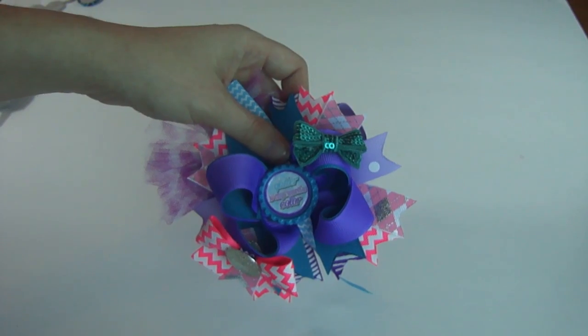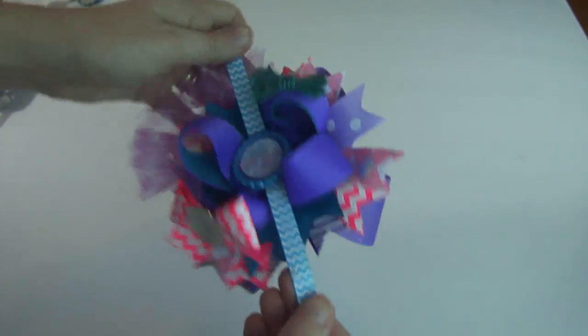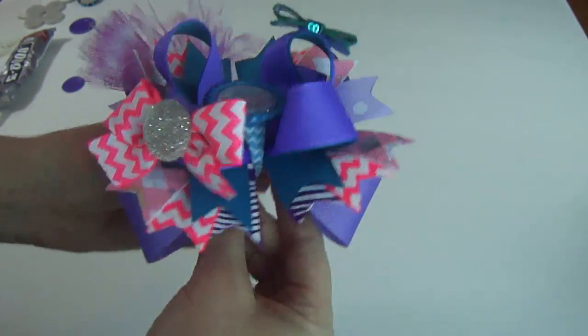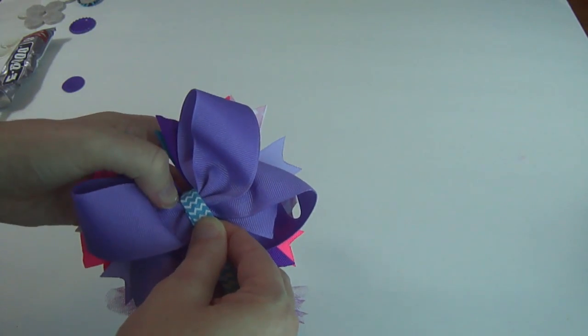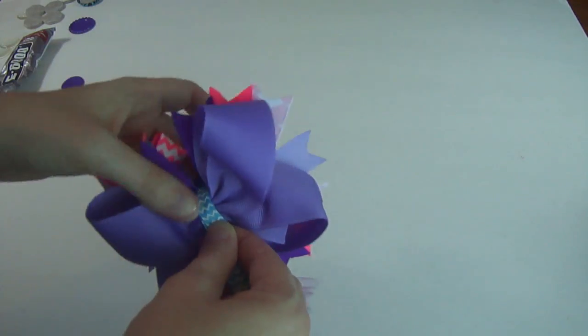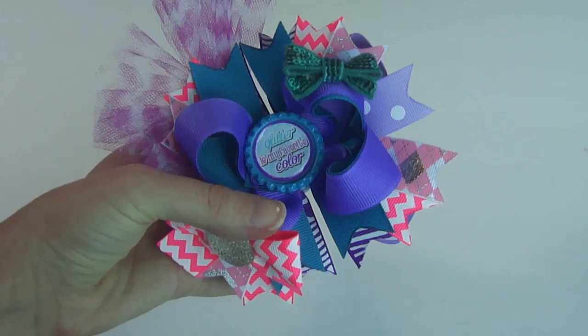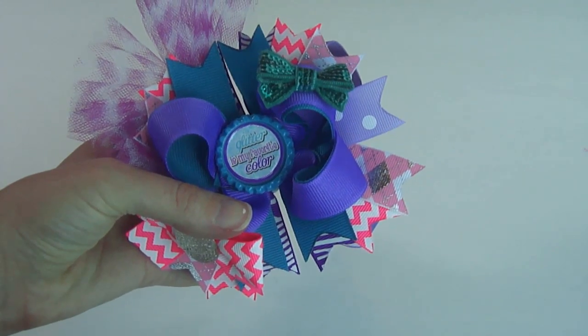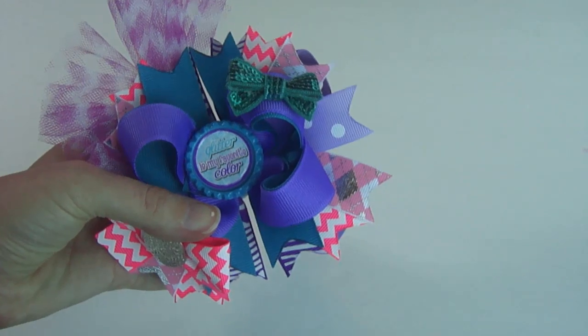And once your bottle cap is completely dry, you're just going to take that excess and we're going to come to the back and just wrap it around your bow. And you're going to glue it to the back of your clip. Just these two ends of the ribbon. And then, of course, clip off the excess. And that, my friends, is how you add bottle caps to your hair bows. Very easy and very simple. Didn't I tell you so?